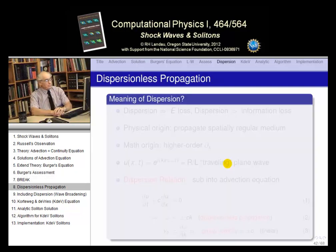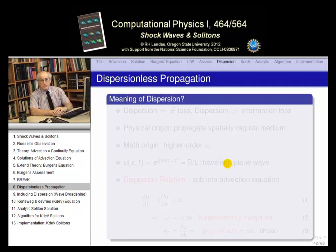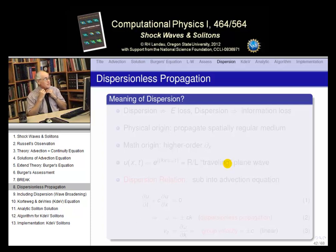Welcome back. Recall we've been discussing Burger's equation — a fairly simple equation that lets us generate shock waves, both numerically and physically. We'd like to now continue this discussion and see if we can form a soliton, which looks something like a shock wave, from some generalization of Burger's equation. So we have some work to do.